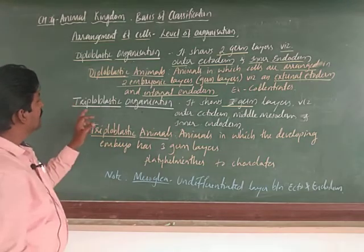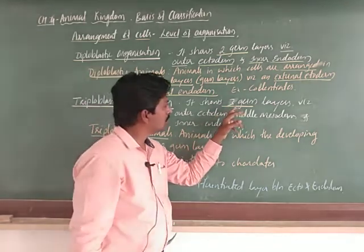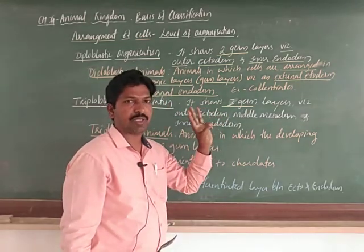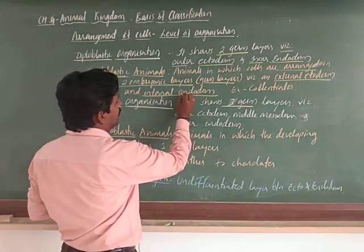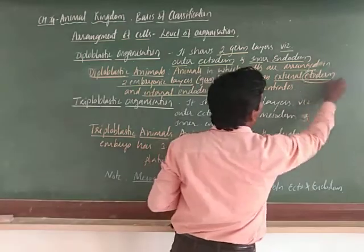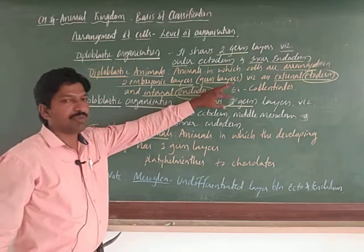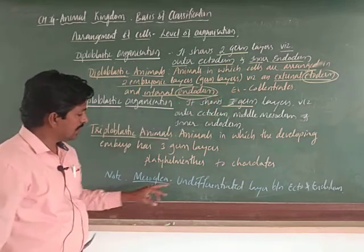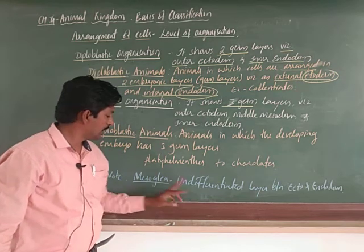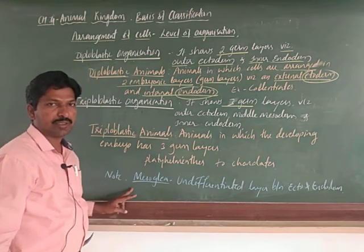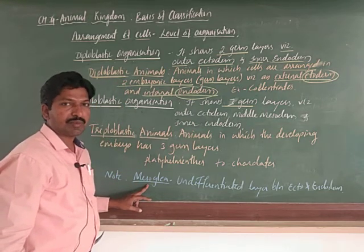Triploblastic organization means all three germ layers must be present. Ectoderm and endoderm are present, and in between these two layers there is also a mesoderm — a differentiated layer of cells. In a diploblastic animal, instead of mesoderm, we may observe an undifferentiated layer, which is mesoglea, not made of true cells.